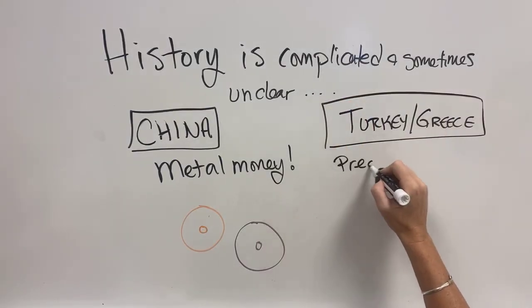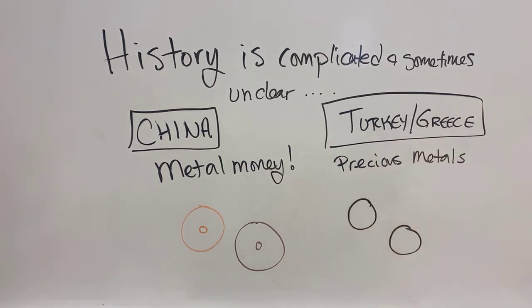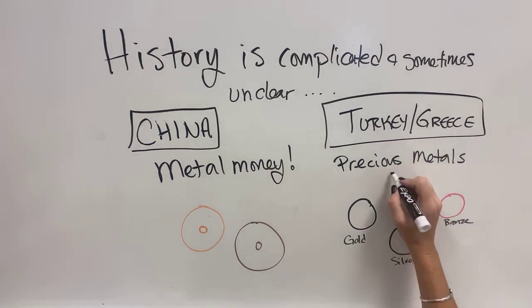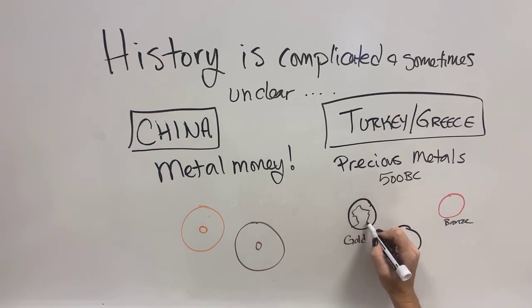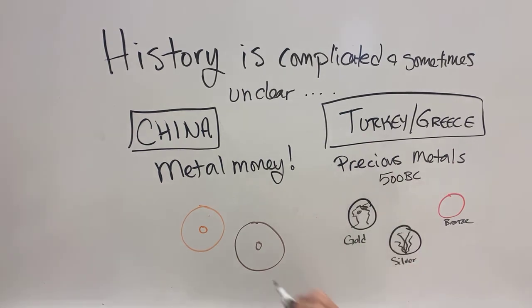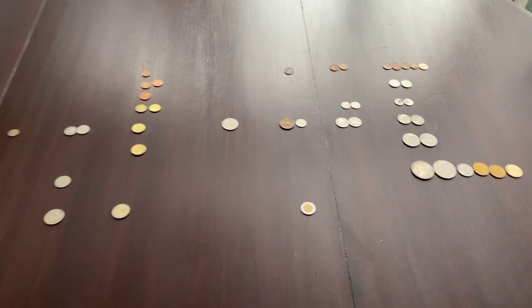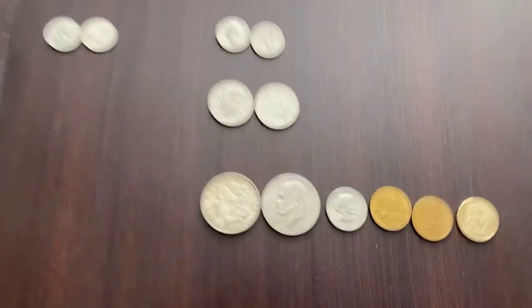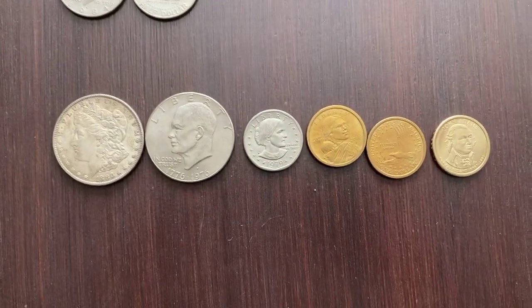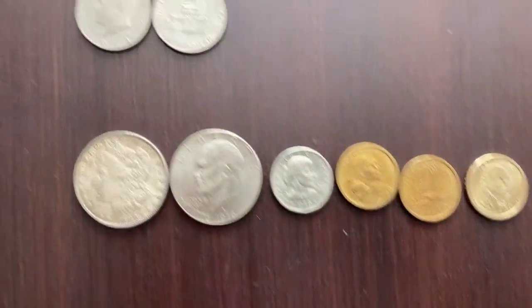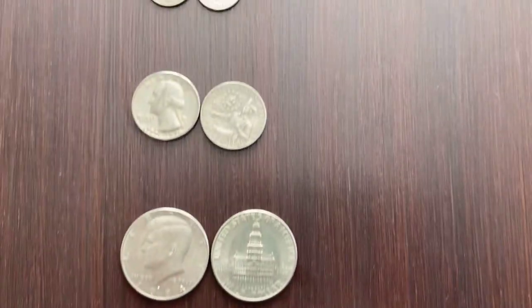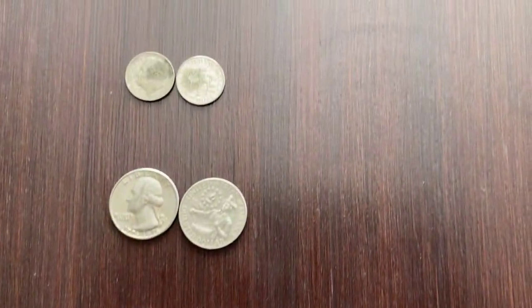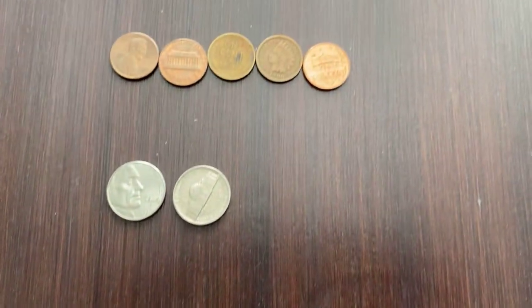Then in Turkey and Greece, about 500 years later, they started making money out of precious metals like gold, silver, and bronze, and stamped heads, faces, and important things into it. In the United States, we have dollar coins, 50 cents, 25 cents, 10 cents, 5 cents, and 1 cent.